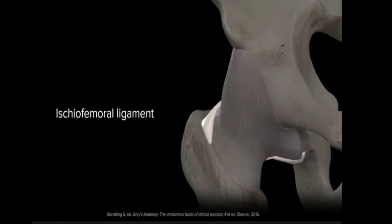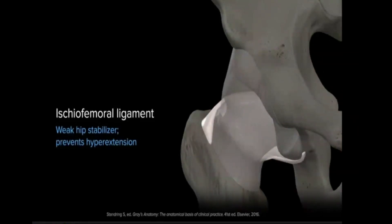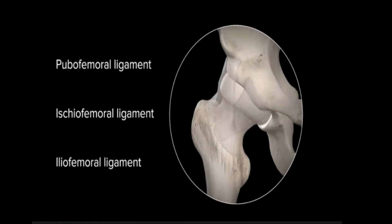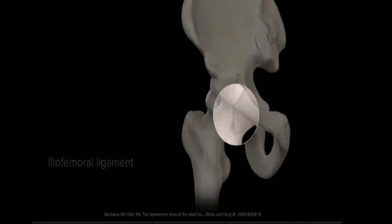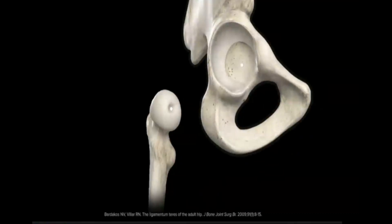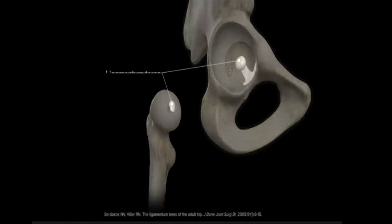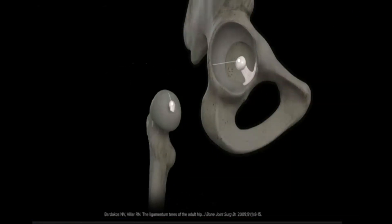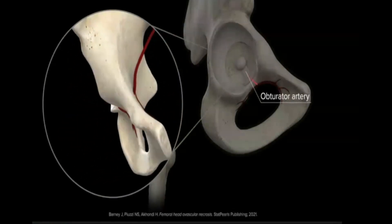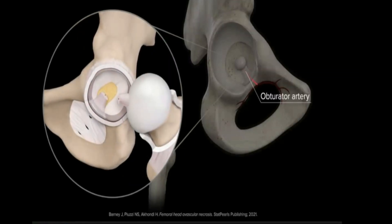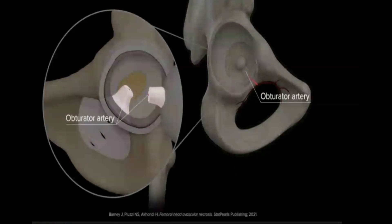From the medial and lateral parts of the ischiofemoral ligament, the distal attachment is along the posterior circumference of the femoral neck. The weakest of the hip ligaments, the ischiofemoral ligament functions to prevent hyperextension. Together, the ligaments provide stability to the hip by compressing the femoral head into the acetabulum. In addition to the extraarticular ligamentous stabilizers, there is an intraarticular ligament extending from the fovea capitis of the femoral head to the acetabular notch called the ligamentum teres, or foveal ligament. Contained within the ligamentum teres lies the acetabular branch of the obturator artery, which provides a minor source of arterial blood supply to the hip.